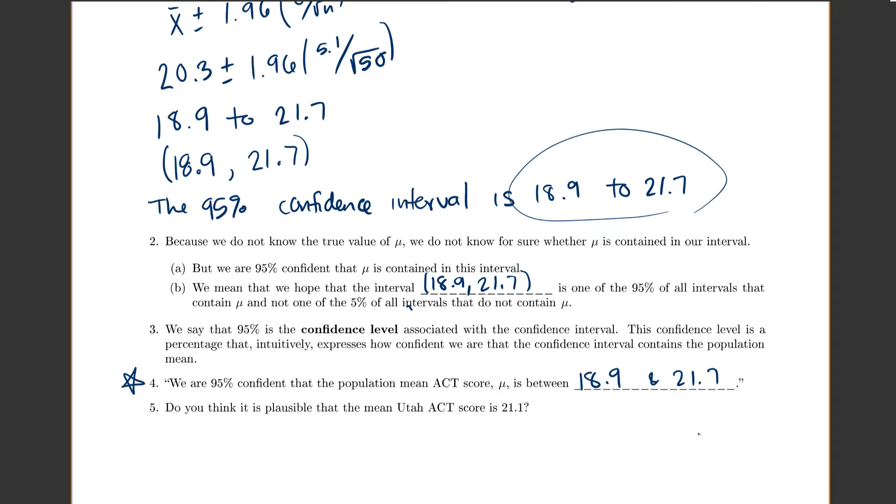And then I might ask you something like, do you think it's plausible that our mean, the true mean ACT score is 21.1? And so, you look at your interval and you're like, oh, well, 21.1 is in there. I'm 95% confident between 18.9 and 21.7, so 21.1 seems plausible. It's in my confidence interval. So, I'd say yes. Because 21.1 is in the 95% confidence interval.